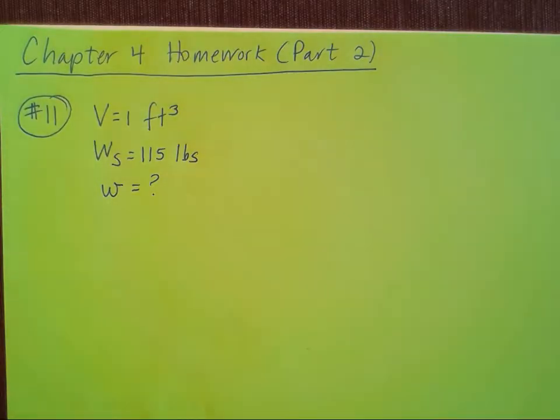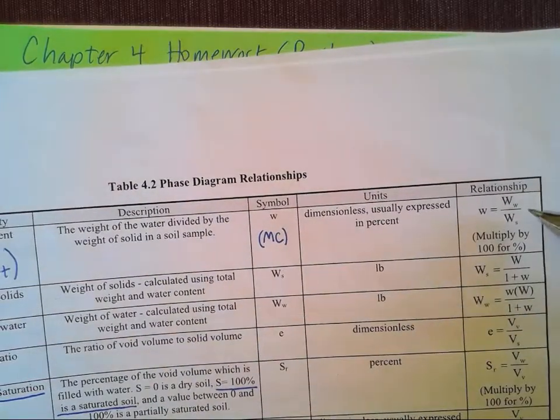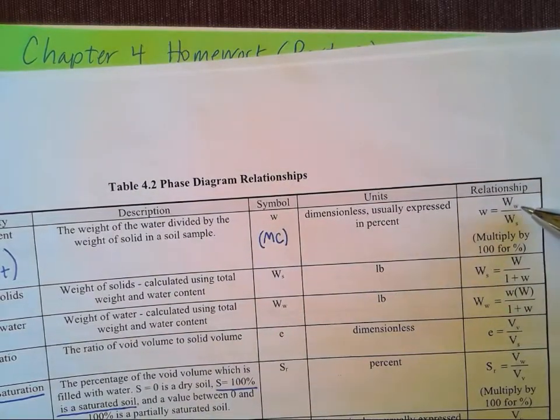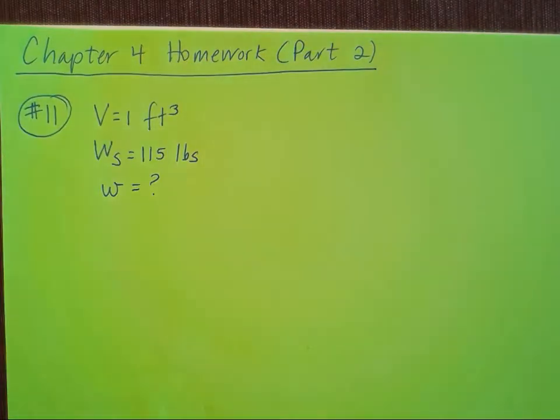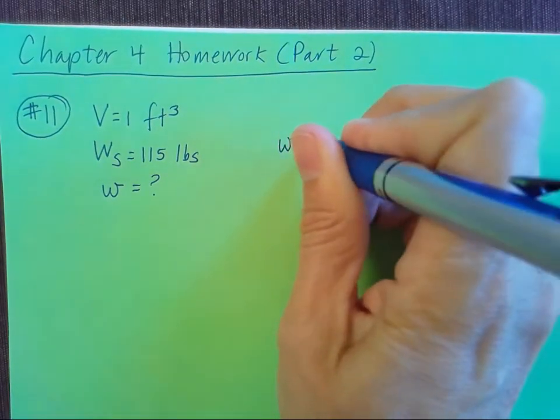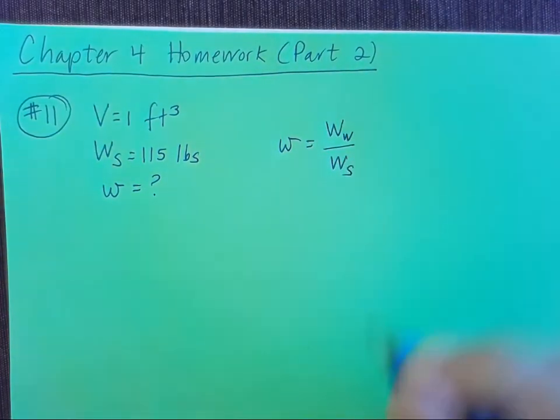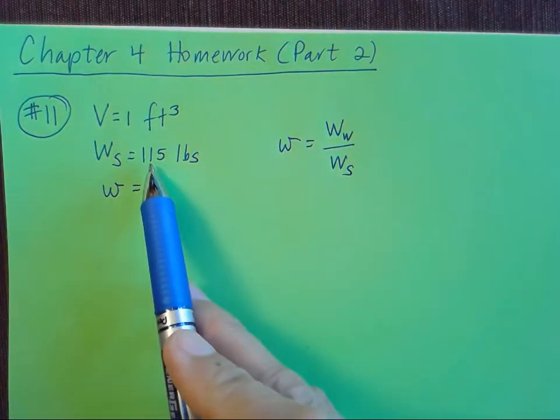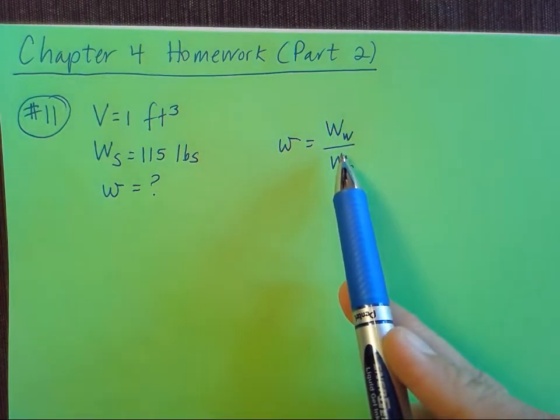So you grab that, and you look under your water content/moisture content. Remember that it's a ratio of the weight of the water to the weight of the solids. So let's write that down here. My water content is that ratio of the weight of the water to the weight of the solids. Well, I know my weight of the solids. It was given to me in the problem. So all I really need to find is my weight of the water.